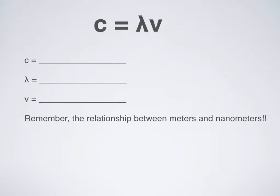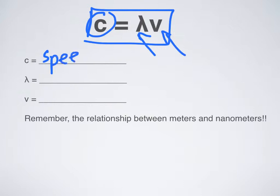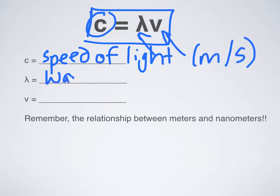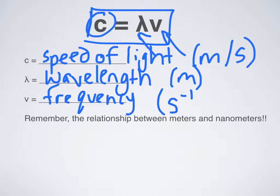How do we express this inverse relationship mathematically? The equation is C equals lambda times V — that's called the speed of light equation. C is the speed of light. Speed of light is measured in meters per second. Wavelength, lambda, has to be measured in meters — though frequently it's measured in nanometers, so we'll talk about how to convert between those. Frequency V is measured in a very strange unit called inverse seconds, but the more common abbreviation is Hz for hertz. If you've ever looked at a computer or phone when they talk about megahertz or gigahertz, that's the frequency.